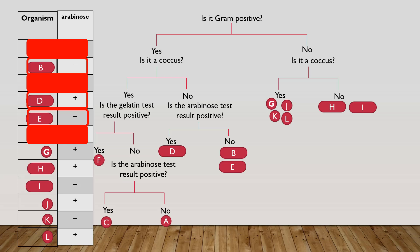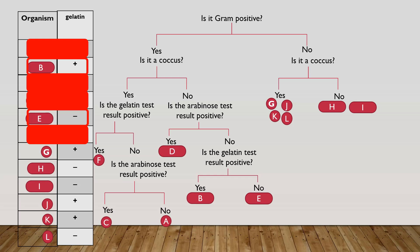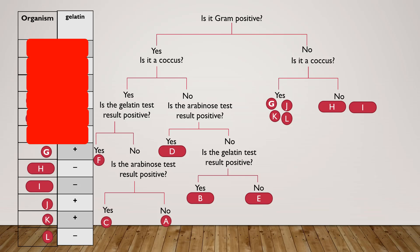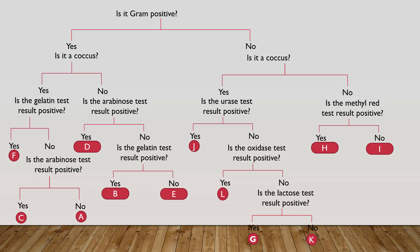I'm going to move on to the next group: bacteria B, D, and E. Notice you can ask the same questions more than once, as long as it helps separate the bacteria within the group you're working on. I've asked: is the arabinose test result positive? Yes for D and no for B and E. I was also able to ask: is the gelatin test result positive? That separated B from E. It took two questions to separate B, D, and E. Now I can cross those off. We're left with organisms G through L, and if you continue step by step, you'll have 12 individual bacteria in their own groups.